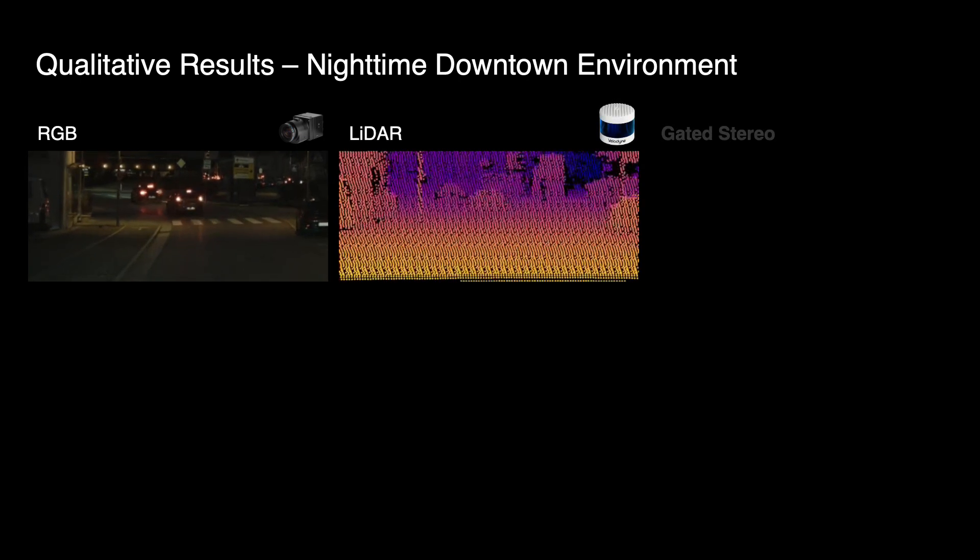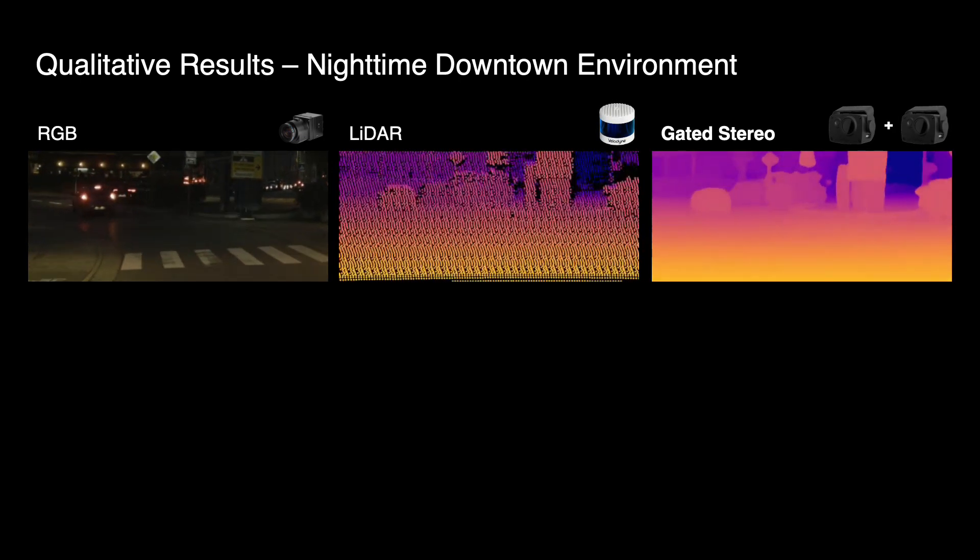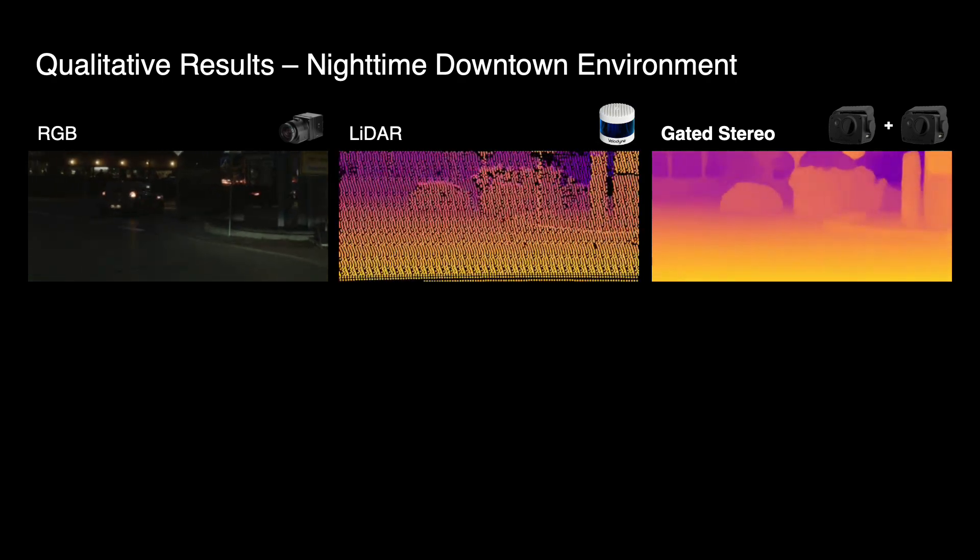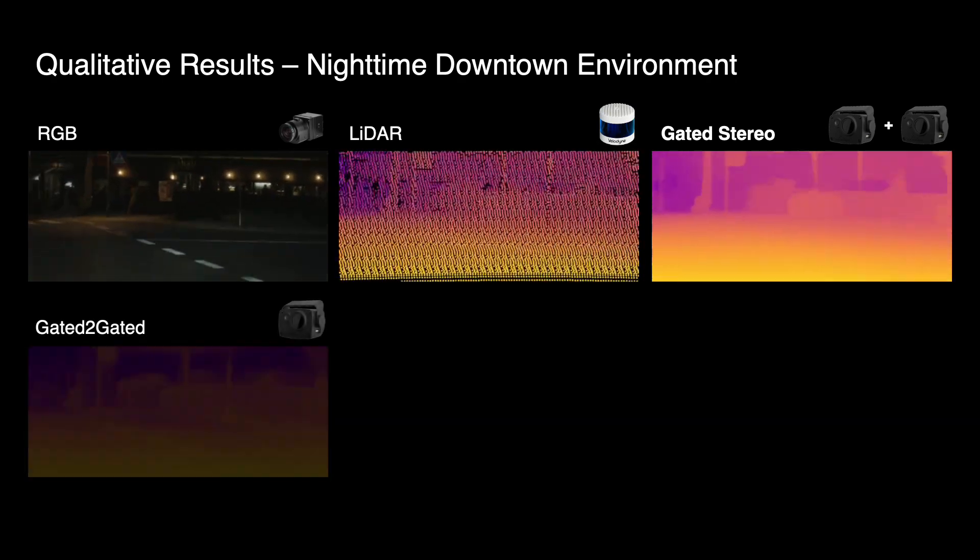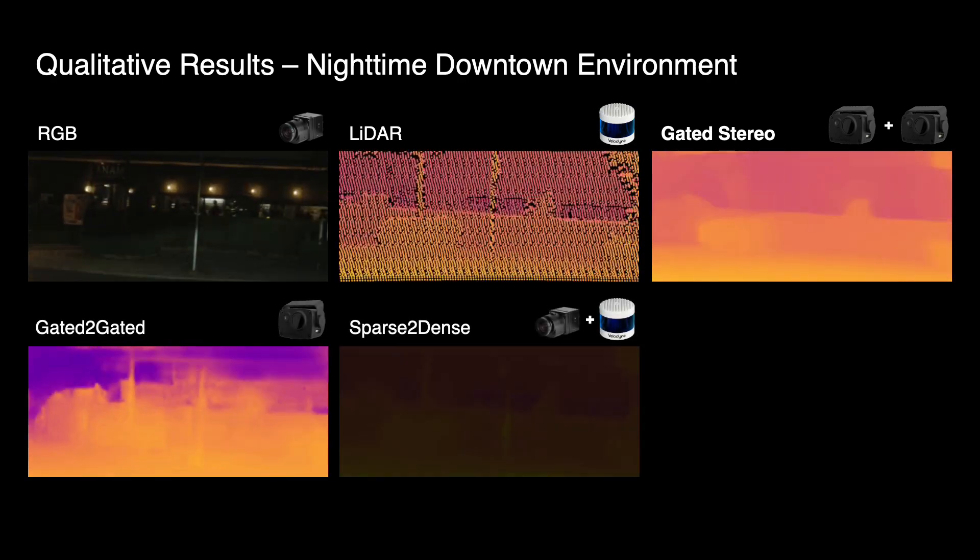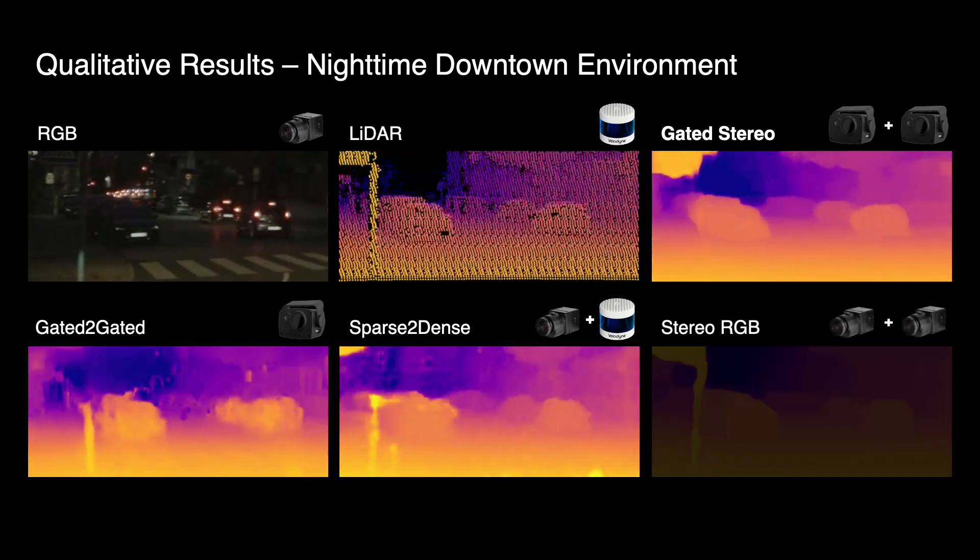We qualitatively compare our method to existing depth prediction algorithms. The top row shows the image of the RGB camera, the point cloud of the lidar system, and the depth output by gated stereo. The bottom row shows state-of-the-art depth prediction algorithms including a monocular gated method, a sparse depth completion method, and the recent stereo RGB approach.